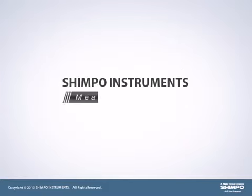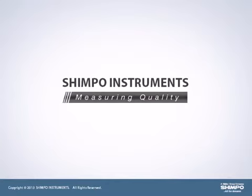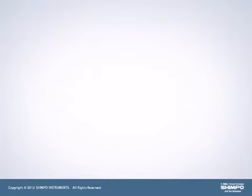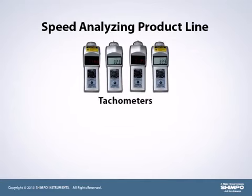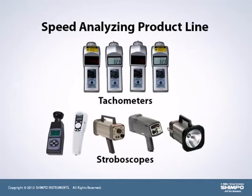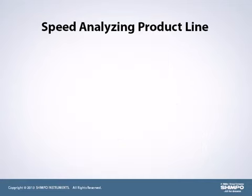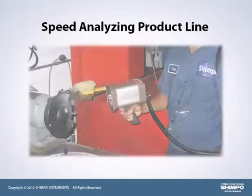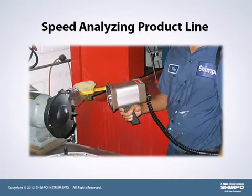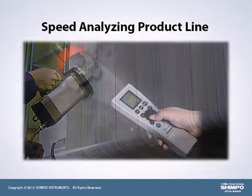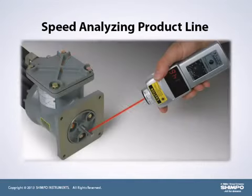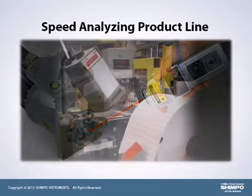SHIMPO Instruments — Measuring Quality. A core competency for SHIMPO is the Speed Analyzing Product line. This line includes tachometers and stroboscopes. These test instruments are commonly used by maintenance personnel and technicians to monitor, maintain, and tune their systems for optimal performance and preventative maintenance analysis.